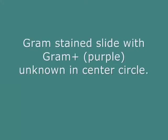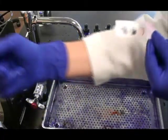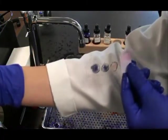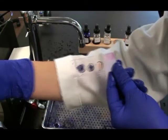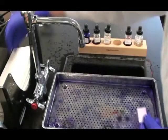I'd also like to show you an example of another slide that I prepared with a Gram-positive unknown. You see my positive control on the left, my negative control on the right, and this unknown is purple like the positive control.